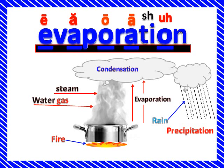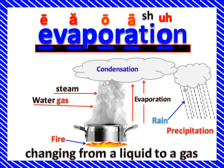Evaporation is when the sun — like you see the fire heating up the pot — when the water in the pot gets hot, you see the water gas, steam, going up into the clouds. It's evaporating up into the clouds, and then it's going to condensate in the clouds, and it's going to come down as precipitation — as rain. Evaporation is changing from a liquid to a gas.